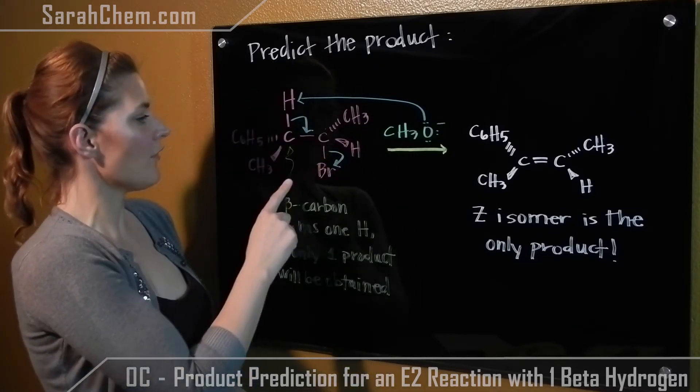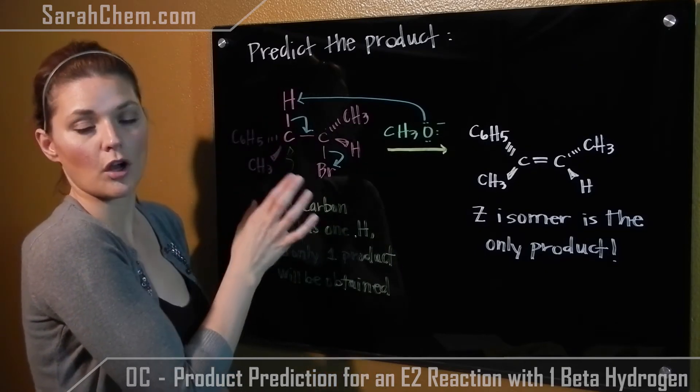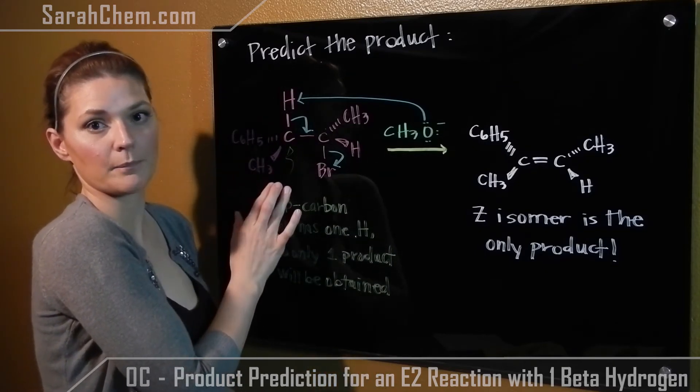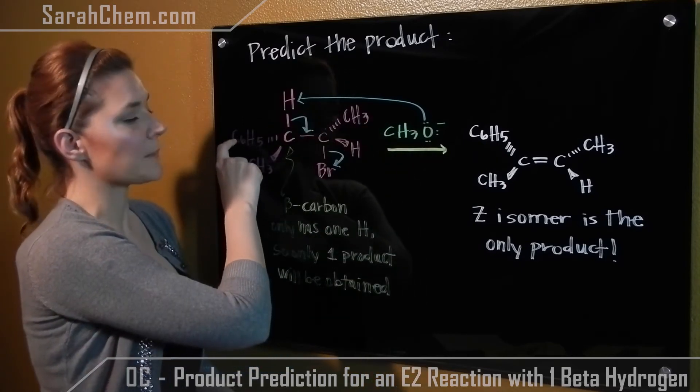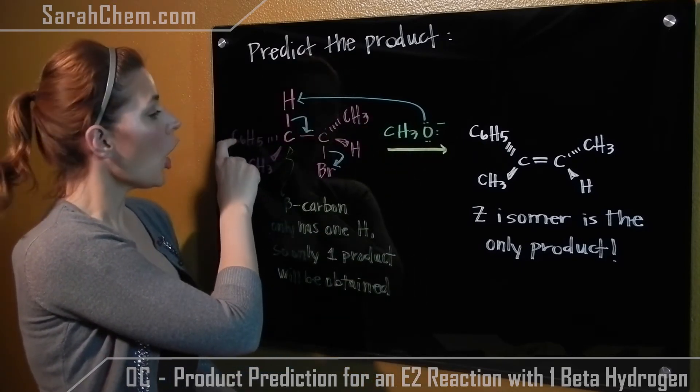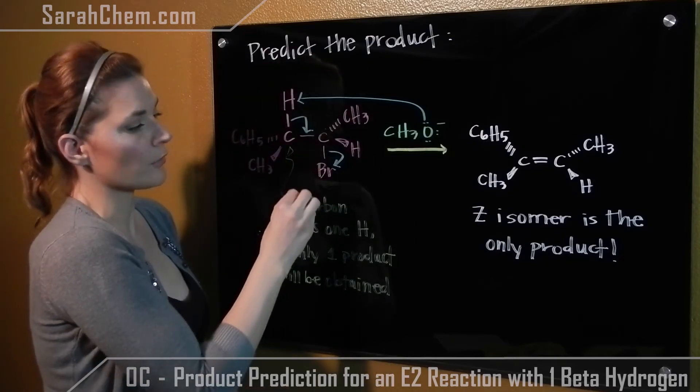As you can see, I have a fixed configuration that I have drawn for this starting alkyl halide. So now the configuration of each of these wedged and hatched substituents will not change. All we're doing is removing the H and removing the bromine.